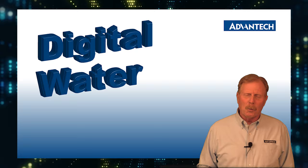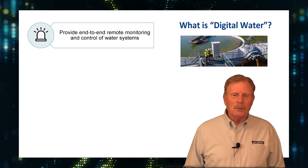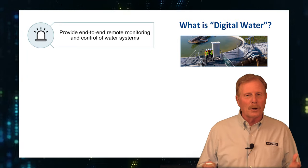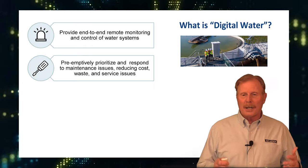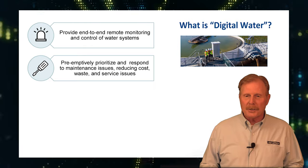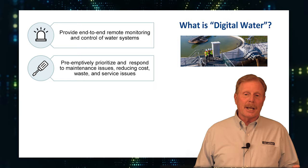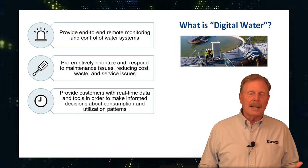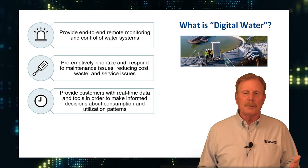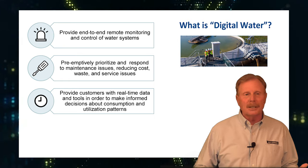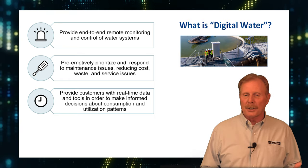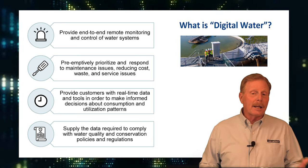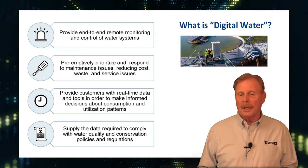You might ask yourself, what is digital water? Well, digital water is a way to provide an end-to-end solution for monitoring of water systems, to preemptively prioritize and respond to break-fix maintenance issues, and also reducing cost and service issues within the plant — providing real-time data to the folks that need it in order to make informed decisions on consumption, utilization patterns, how best to service the community, and to supply data to comply with regulatory and policy regulations within a water company.